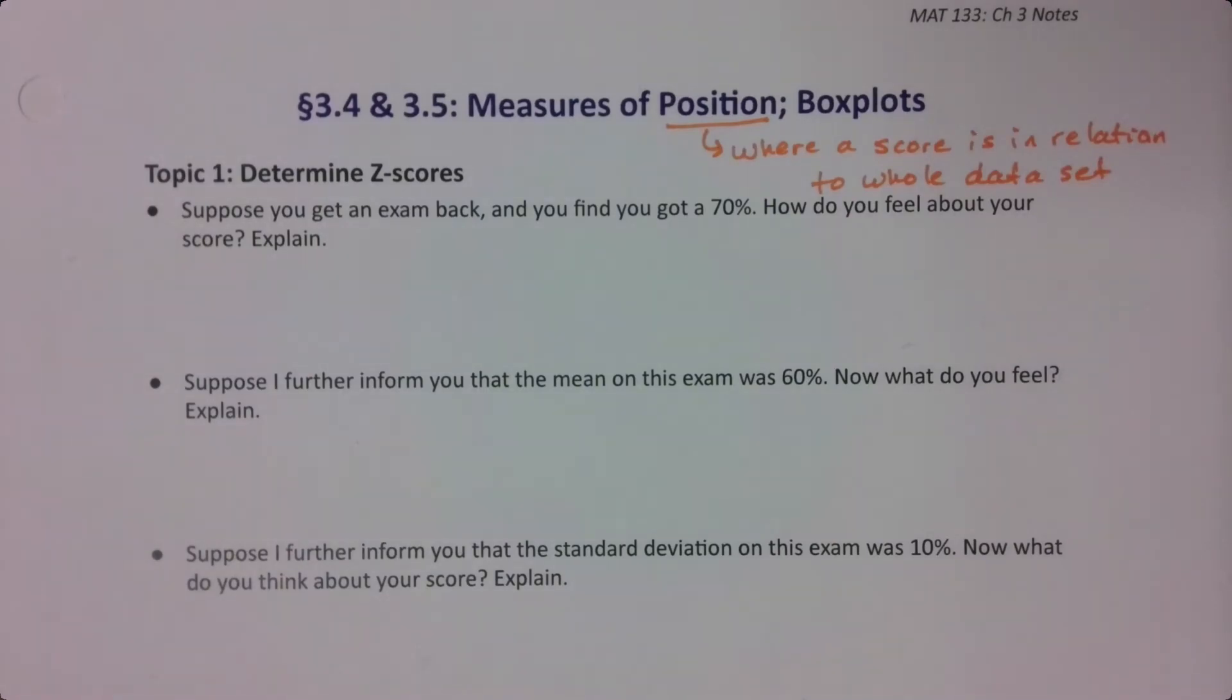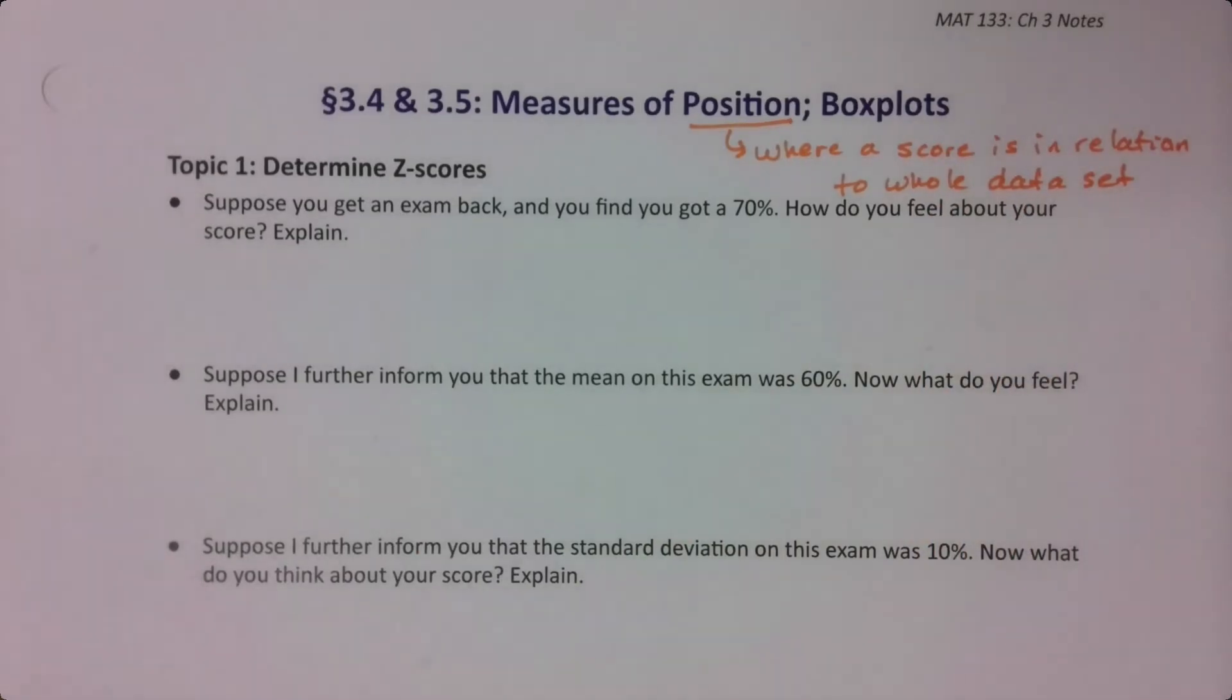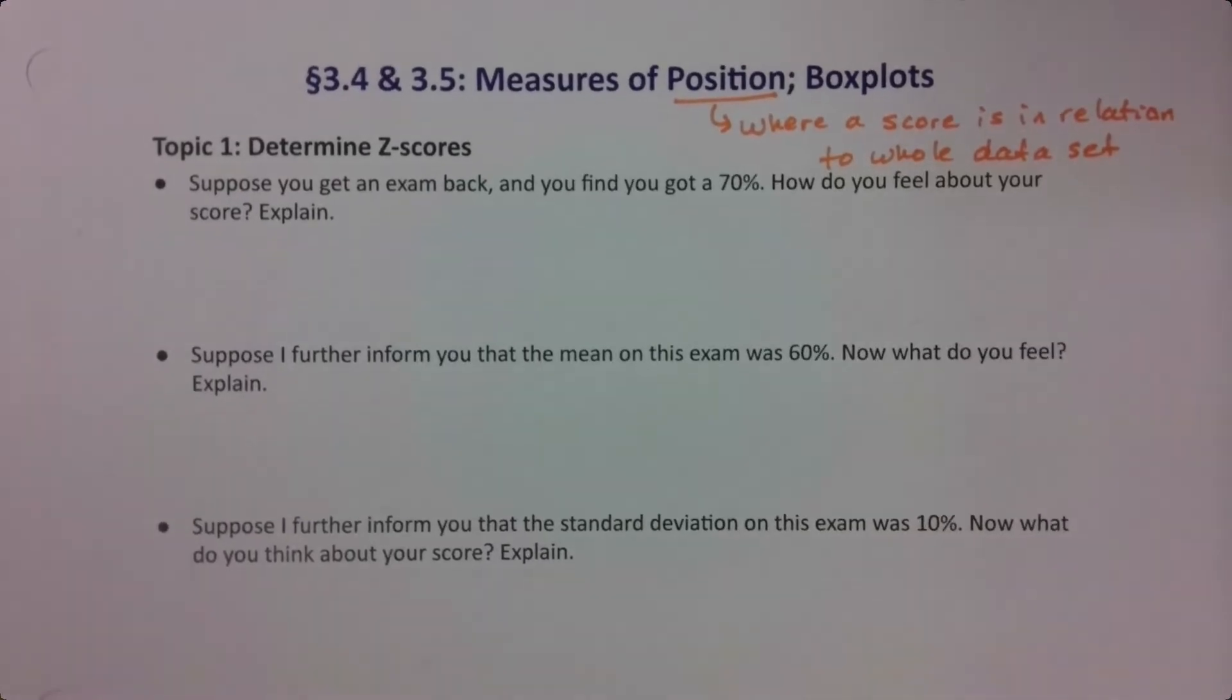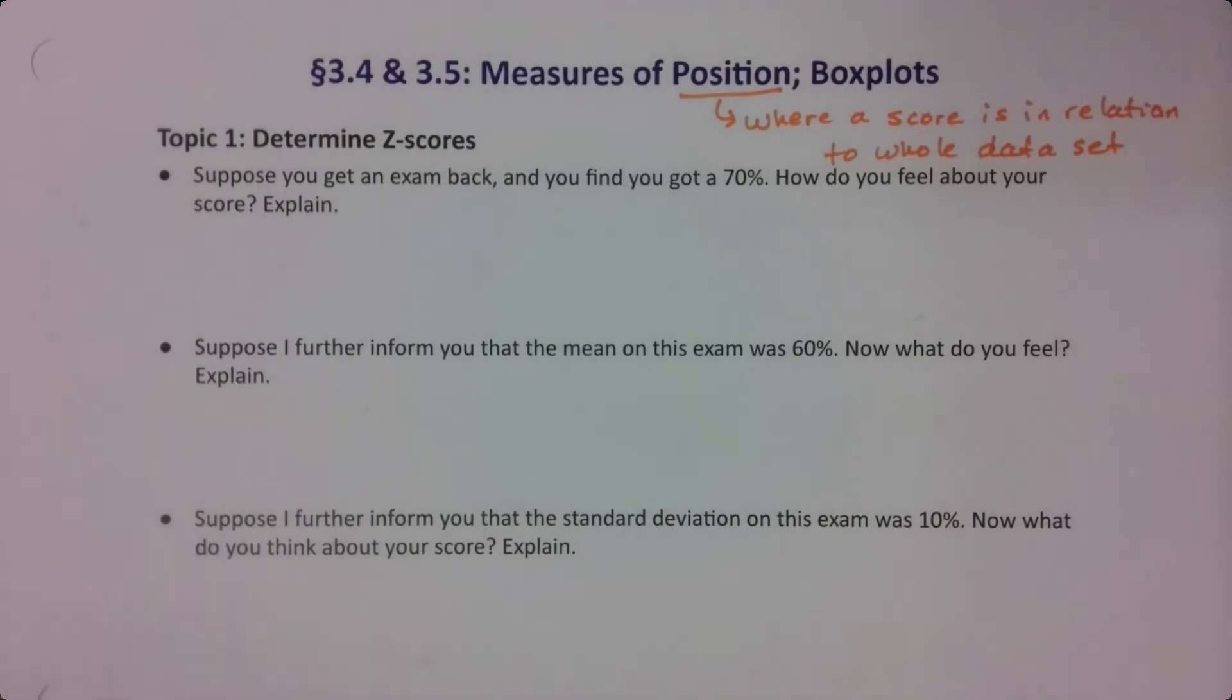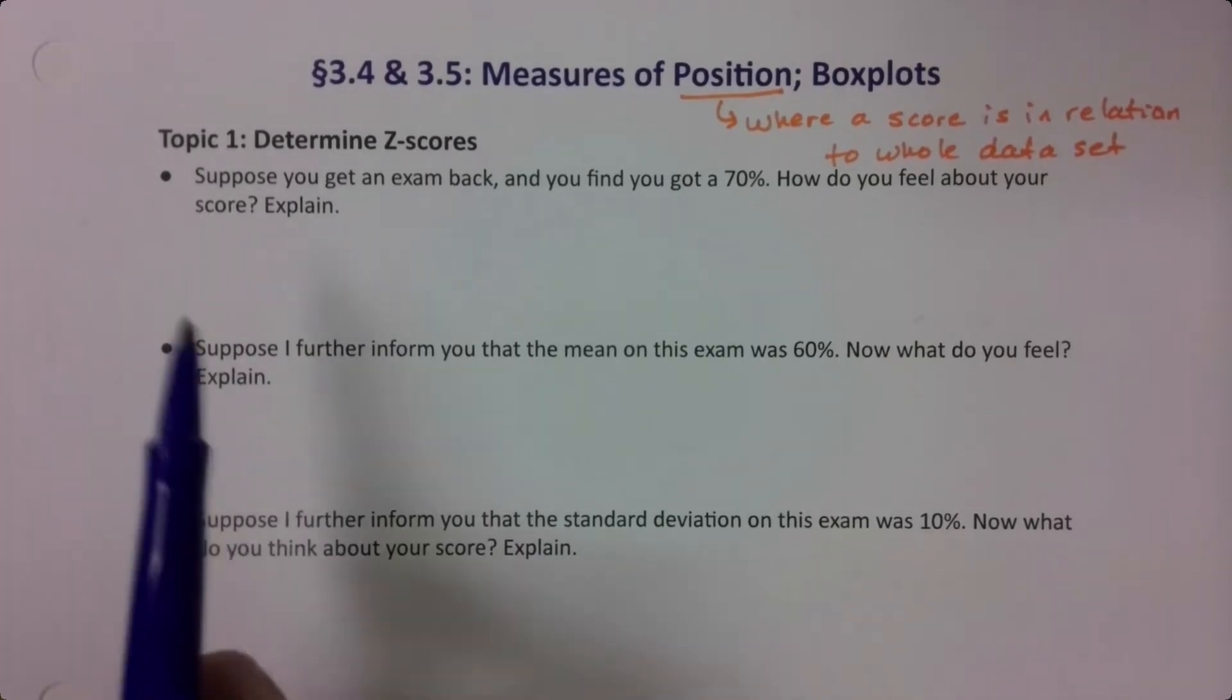I promised in an earlier video that we would learn some more numerical measures that summarize a data set, since that's the title of the chapter. And now is the time. We're going to learn about measures of position. Position is where a score is in relation to the whole data set. We're also going to learn another measure of spread that we haven't run into yet, but that won't be for a while. So first thing we want to do is look at the idea of a z-score. Don't look ahead. Let's just read through these as they come.